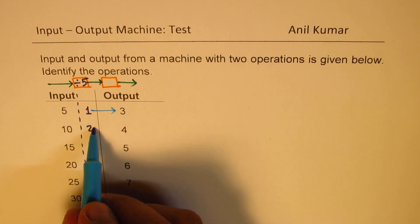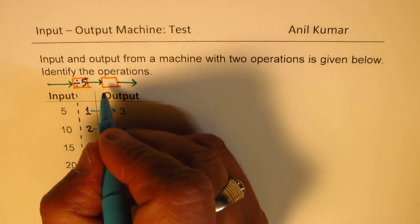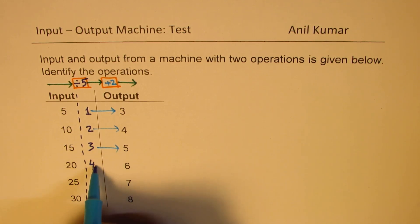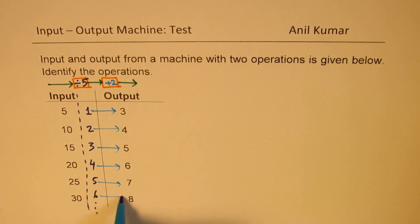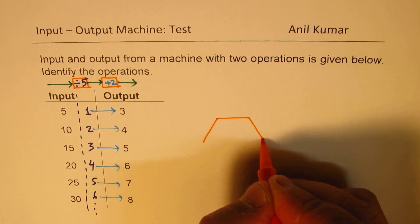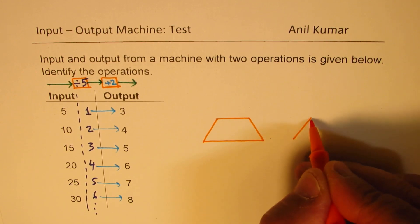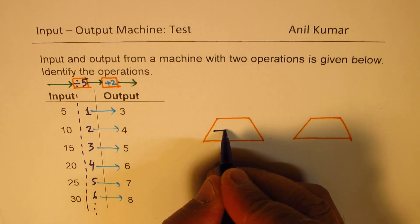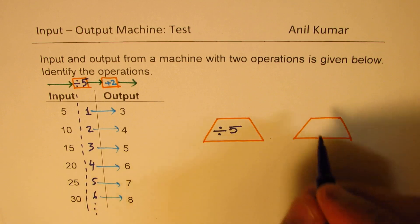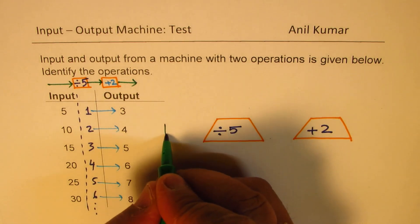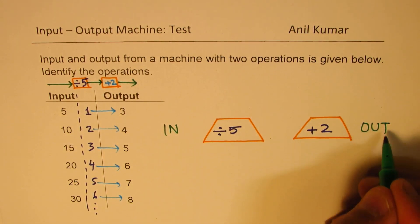From 1 I need to get 3, and from 2 I need to get 4 — clearly I should add 2. If I add 2, I get: output 3 from 1, 4 from 2, 5 from 3, 6 from 4, 7 from 5, 8 from 6. So the machine is: for every input, first divide by 5, then add 2.